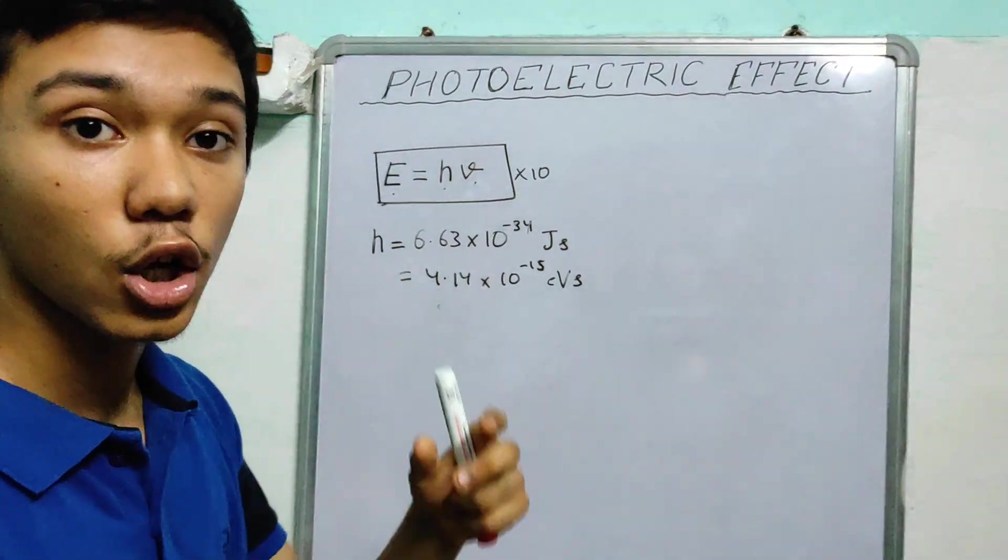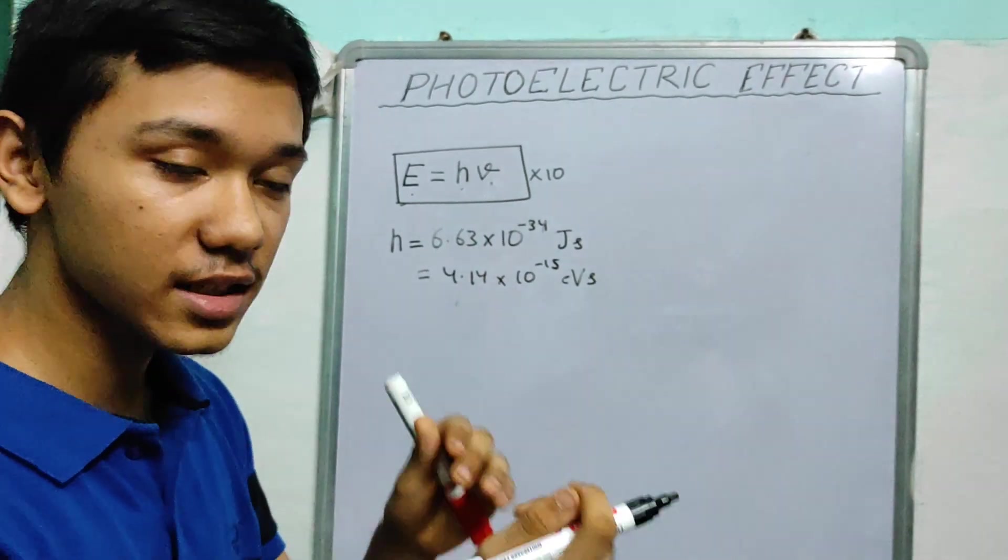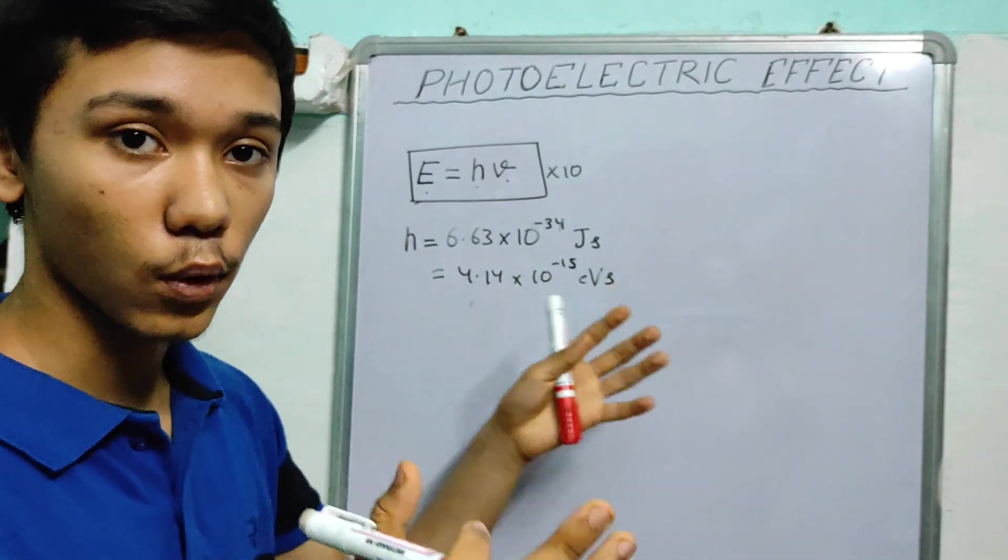Integer multiple of H nu. This is known as quantization of energy. Energy increasing by fixed amounts. Quantization of energy.